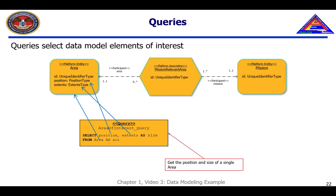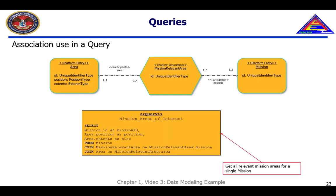The query shown here is a very simple one. It identifies the position and extents of the area entity as being of interest, aliasing the extents characteristic to 'size' and the area entity to 'AOI'. Selecting all areas associated with a mission requires a more complex query, which uses JOIN statements to indicate how the mission and areas are connected through the mission-relevant area association.